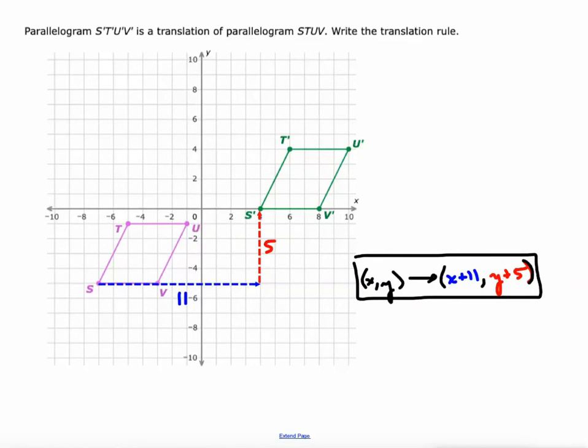And we can go ahead and test it and see if it works. So S was at... I always try a different point besides S. How about T, which is at negative five, negative one. If we do this rule to it, what's it become? Let's see. Well, negative five plus 11 is six. And negative one plus five is four. Is T prime at six, four? Yep. There it is.